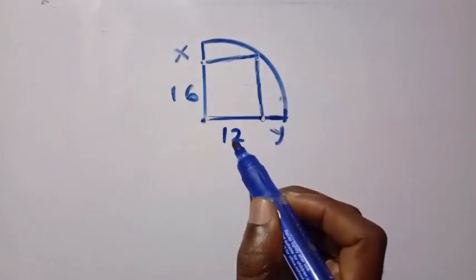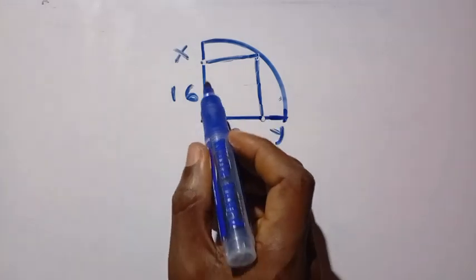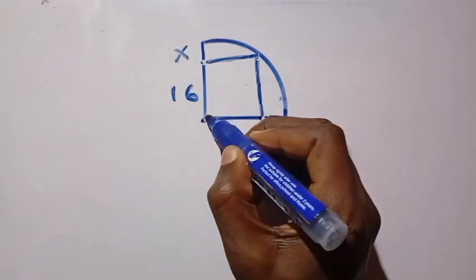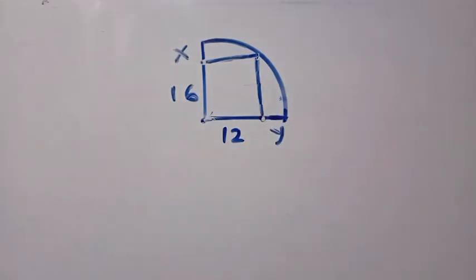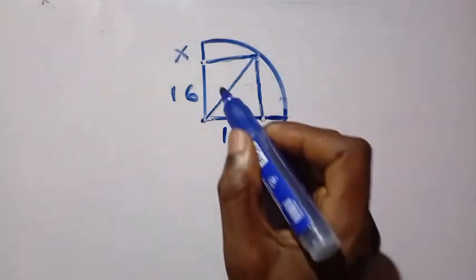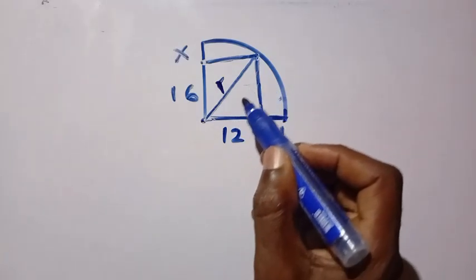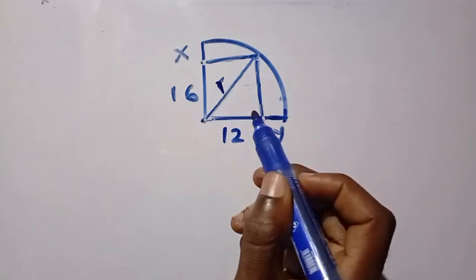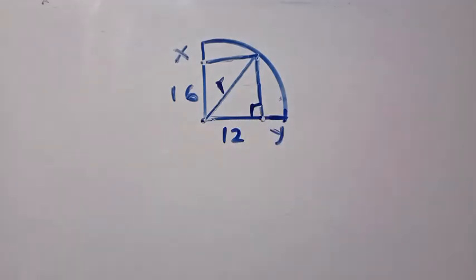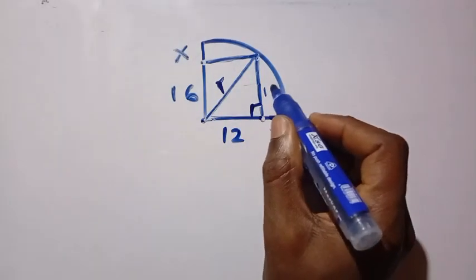The first step is to recognize this line as the radius of the circle. If you draw any point from this circle to the center, it will also be the radius. Looking at the triangle formed, this is a right angle triangle because this is a rectangle, so the angle here will be 90 degrees. Since these sides are equal, this side is also 16.